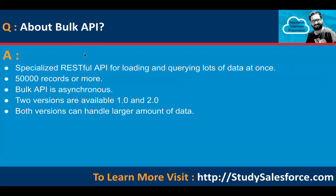About Bulk API: it is a specialized RESTful API for loading and querying lots of data at once — 50,000 records or more. Bulk API is asynchronous. Two versions are available: 1.0 and 2.0. Both versions can handle large amounts of data.